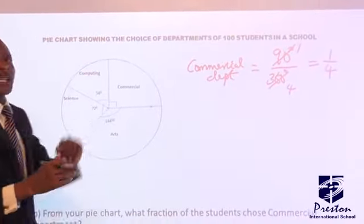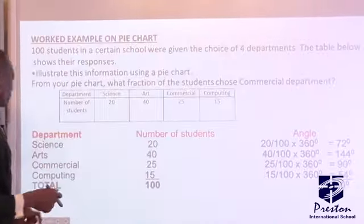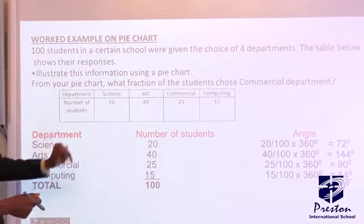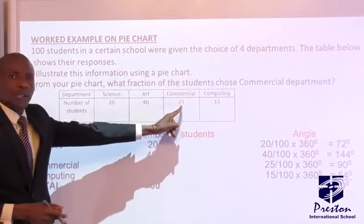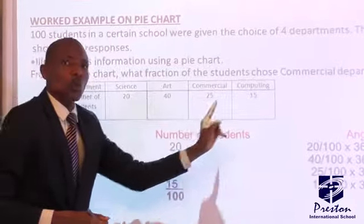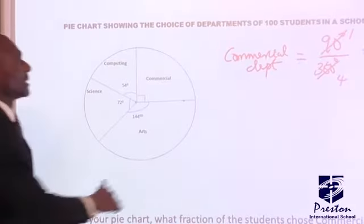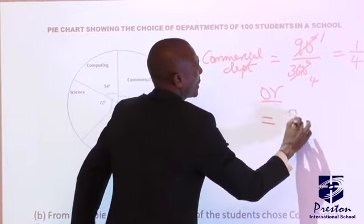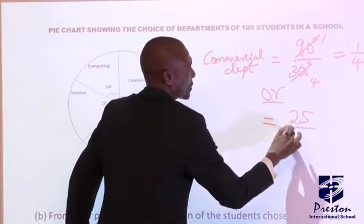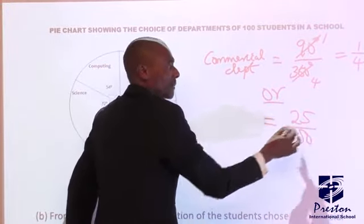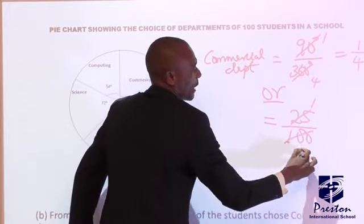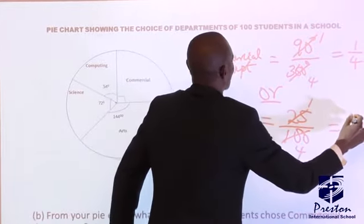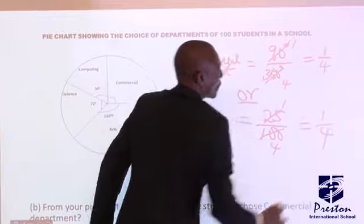What if I don't want to use angles, but I want to use the number of students? Let's go back, look at this. I can also use this. For commercial, how many? 25. And what is the total number of students? 100. So I can say, I can use this other method, that it means 25, number of commercial over the total 100, the same thing, 25 over 1, 25 over 4, so the fraction of commercial department is 1 over 4.